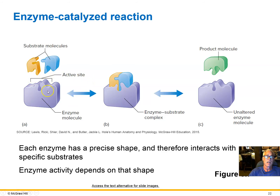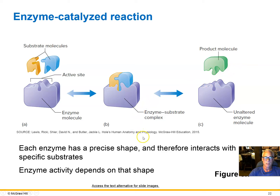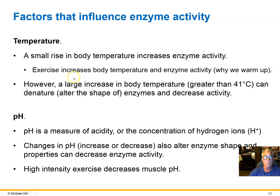Each enzyme catalyzes one specific chemical reaction. The enzyme binds to some reactants — or substrates, as they're often called — and chemically modifies them. Sometimes two reactants are combined to form one product; sometimes a reactant is broken down into multiple products. The key point is that every enzyme has a very precise shape, and its activity depends on that shape — if the shape changes, the substrate will not interact with the enzyme properly.